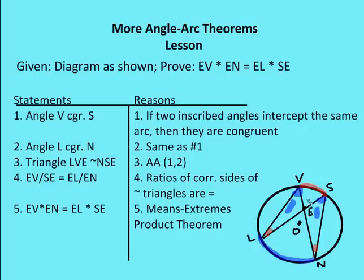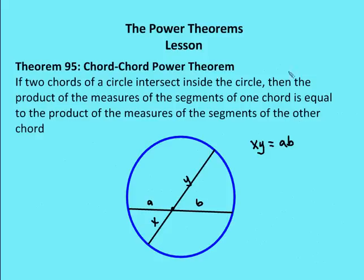Then I use the means-extremes product theorem to show that EV times EN equals EL times SE. And that's what we're trying to prove — EL, a portion of one chord, times SE, the remaining portion of that chord, is equal to NE times the remaining portion of the intersecting chord. So the chord-chord power theorem: if two chords intersect inside a circle, then X times Y equals AB.